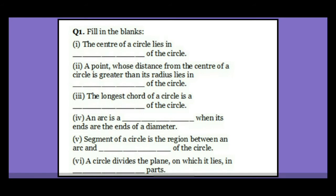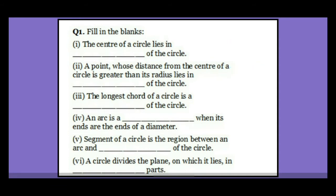The second point is: a point whose distance from the center of a circle is greater than its radius lies on dash of the circle. So first you have to understand the question — if from the center the distance is greater than its radius, it means the point will be coming outside the circle. Outside means you have to use the word 'exterior.'